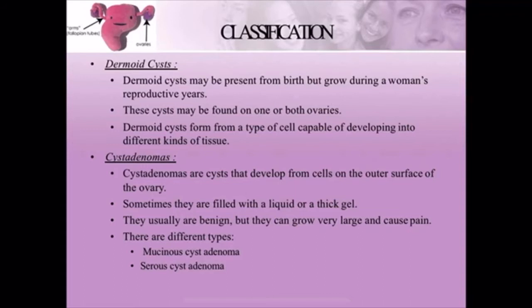Next comes cystadenomas. These cysts develop from cells on the outer surface of the ovary. They are sometimes filled with a liquid or a thick gel. They are usually benign — meaning non-cancerous — but they can grow very large and cause pain. There are two types: mucinous cystadenoma and serous cystadenoma.